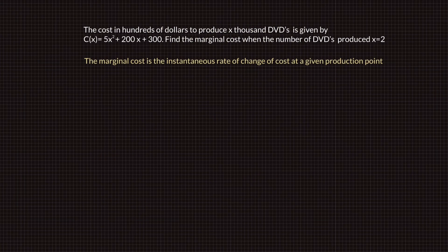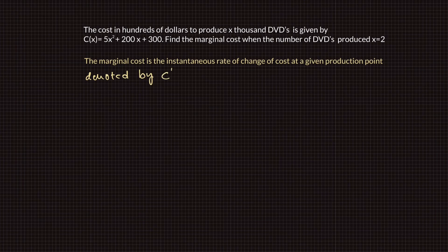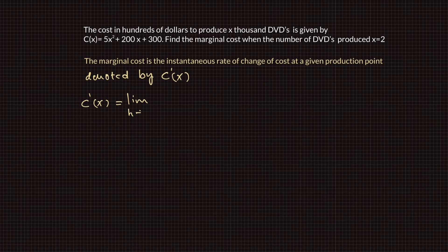The cost in hundreds of dollars to produce x thousand DVDs is given by the function c of x equals 5x squared plus 200x plus 300. Find the marginal cost when the number of DVDs produced is x equals 2. Marginal cost is the instantaneous rate of change of the cost at a given production point, denoted by c prime of x.